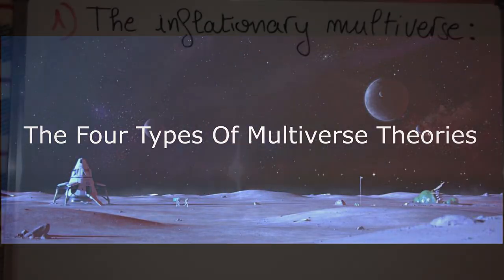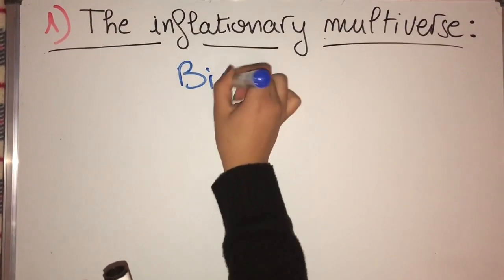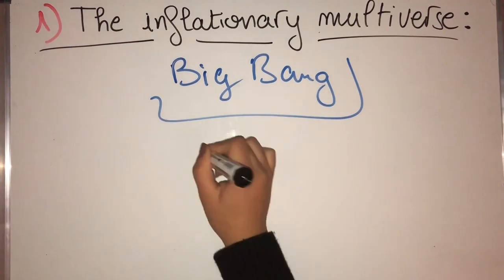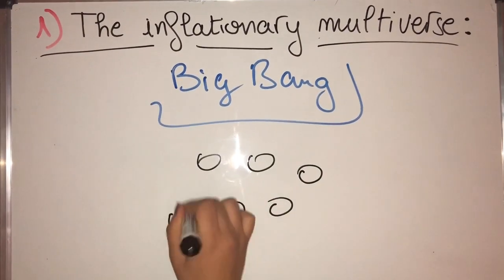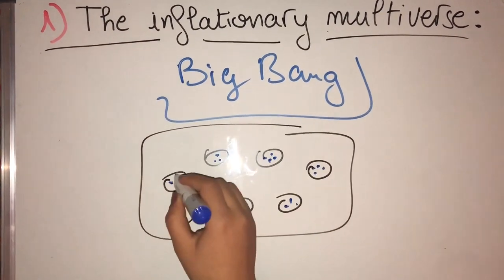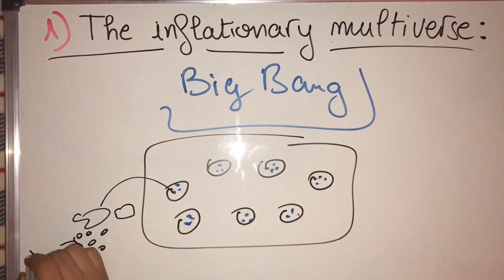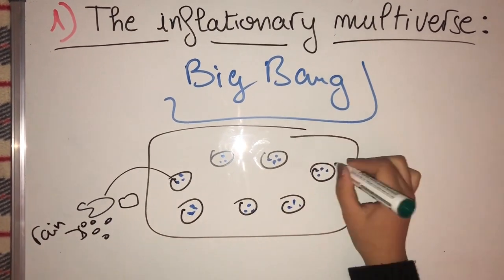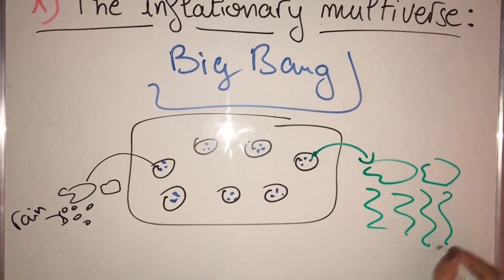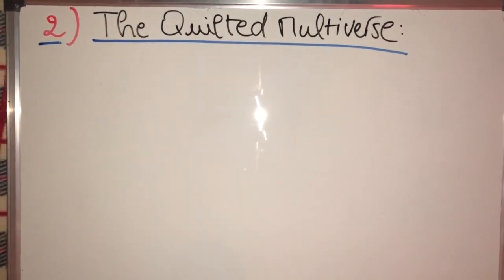According to many theories there might be four types of universes. First, the inflationary multiverse. We all know about the Big Bang theory — well, imagine a lot of big bangs occurring on an endless sea of energy, like bubbles in an ocean. Each one happens in a rapid period of expansion called inflation, and in each of these universes the laws of physics are strangely different.